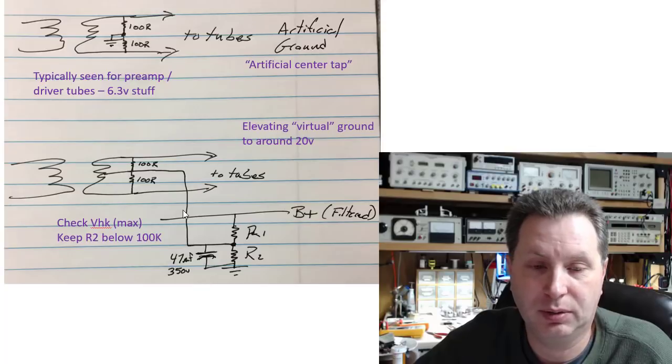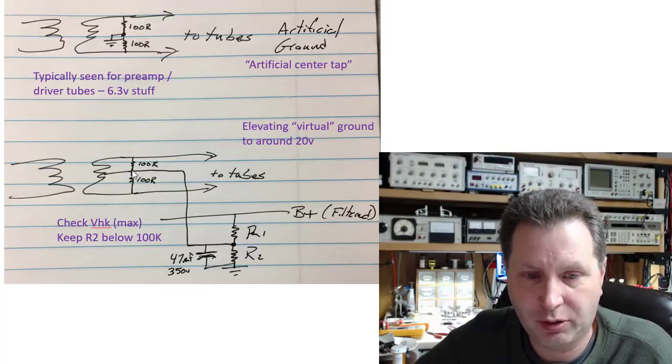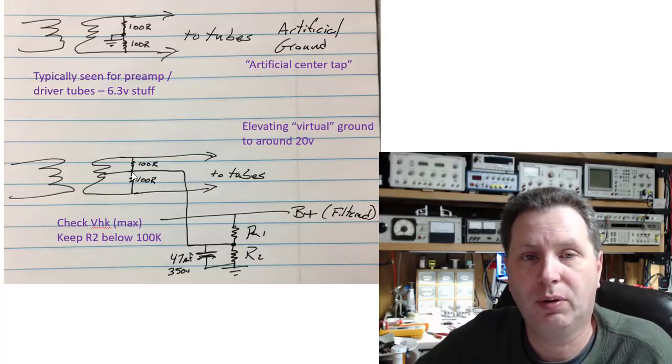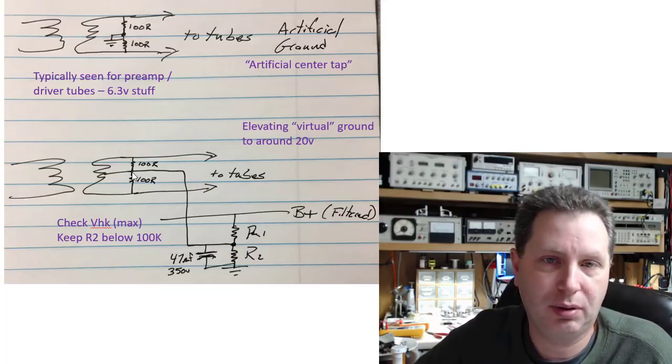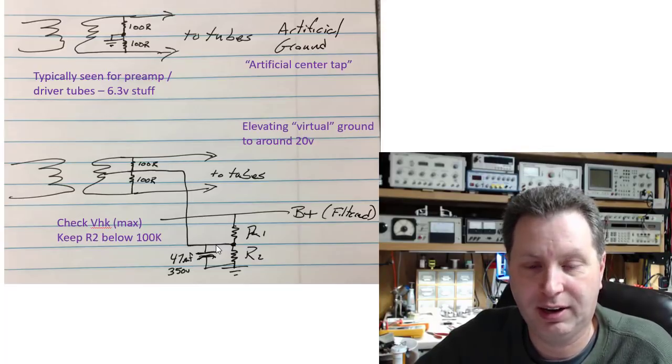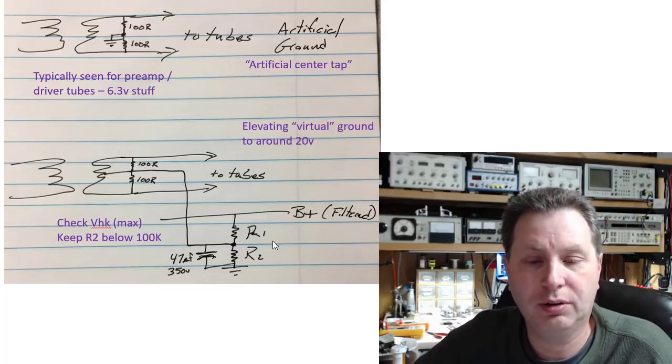You would tie it to the B+. So instead of the center of these—the virtual center tap of this 6.3-volt AC—sitting at 0 volts DC, we're giving it an offset, a DC offset of typically around 20 or 30 volts. And you'll need to do the math to figure out R1 and R2.